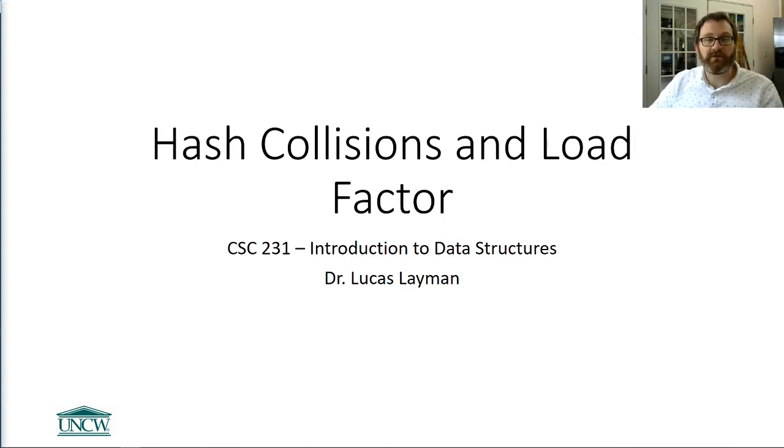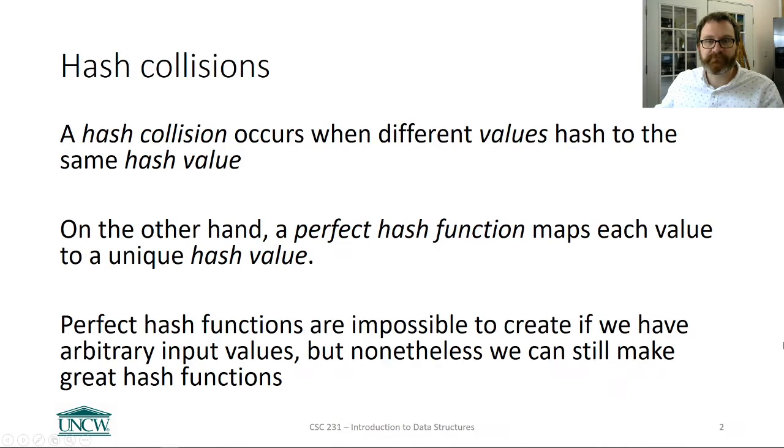And what do we want to do about that? Because even if a hash collision occurs, which is when two values map to the same index or hash to the same value, we still want to put both of those different values in the hash table and be able to search for them later. So how do we deal with something like that?